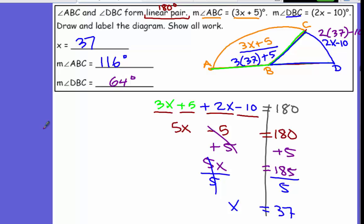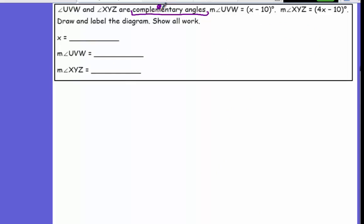So linear pair, you are given two angles. So you add them up to be 180, because linear is 180 degrees. Two angles add up to be 90 degrees. So let's sketch the two angles.